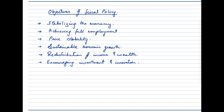For example, if there is a slowdown in the economy, an expansionary fiscal policy can be implemented — with increased government spending accompanied by tax cuts. Another objective is to achieve full employment; fiscal policy measures focused on infrastructure projects or job training programs can help reduce unemployment. Price stability is also an objective, as fiscal policy can control inflation by reducing aggregate demand through increased taxes or reduced government spending.